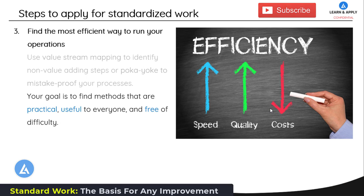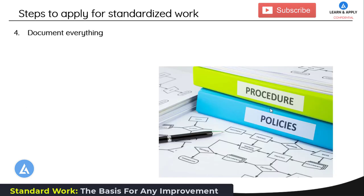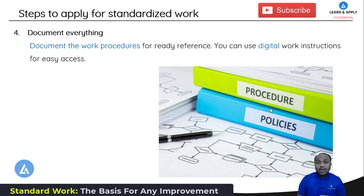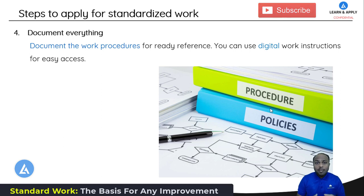The fourth step in implementing standardized work is to document everything. Document the work procedure for ready reference. You can use digital work instructions for easy access, but remember that when a document is modified it must be updated in the system, and all old documents must be removed so there is no confusion among operators and employees. Maintain only one format or standard available for each single activity.